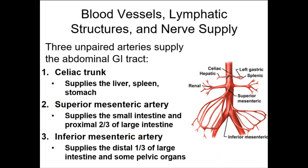The blood supply — the celiac trunk, superior mesenteric artery, and inferior mesenteric artery. The celiac trunk is most superior, coming off the abdominal aorta, supplying the liver, spleen, and stomach. The superior mesenteric artery supplies the small intestine and proximal two-thirds of the large intestine. The inferior mesenteric artery supplies the distal one-third of the large intestine and some pelvic organs.